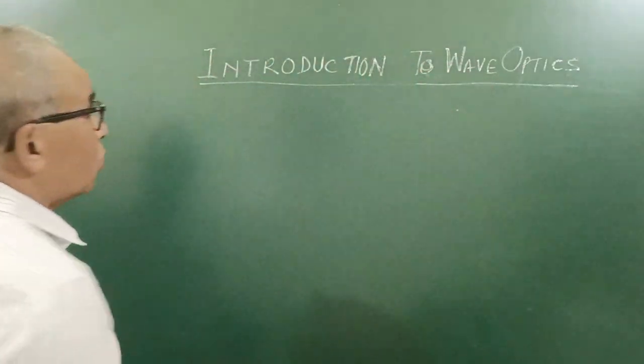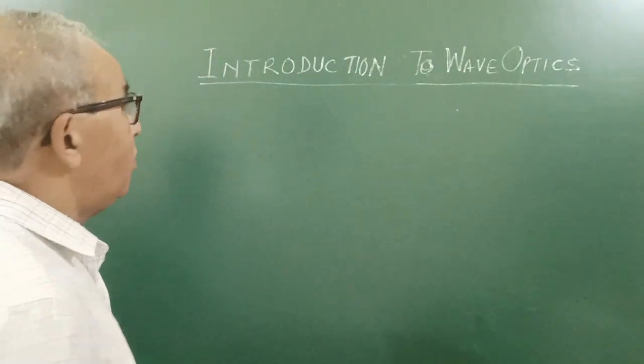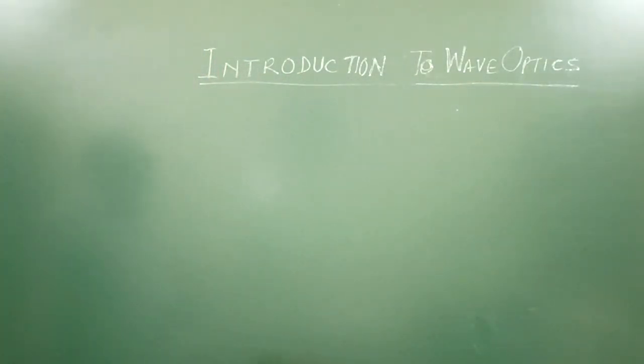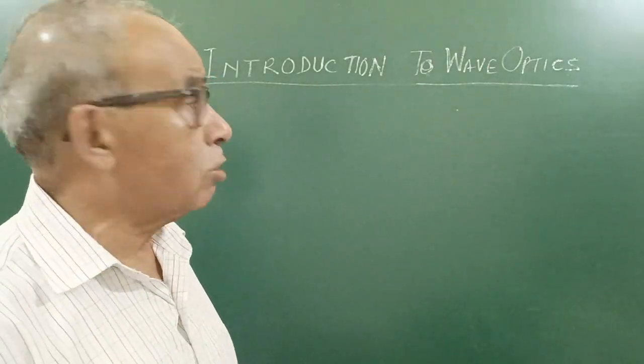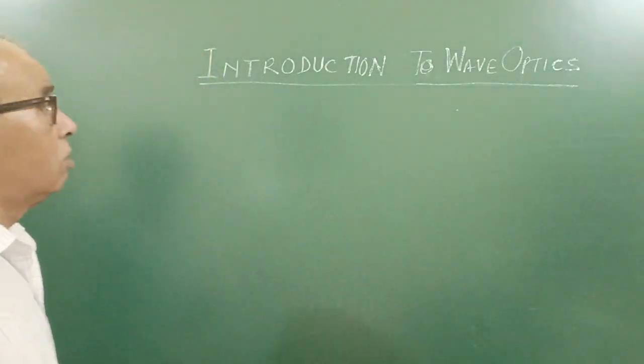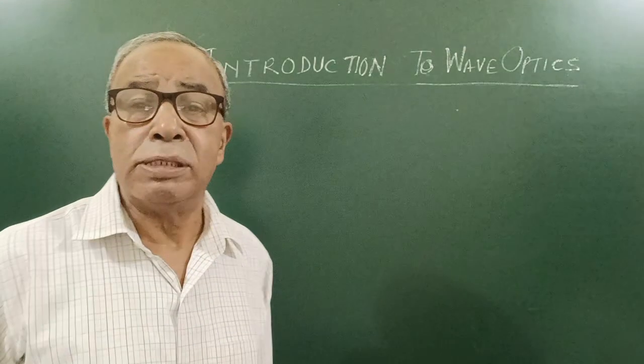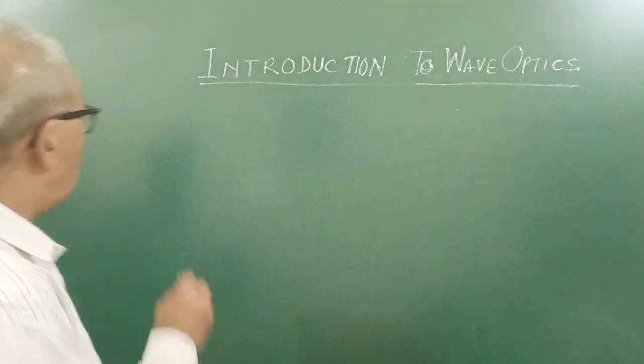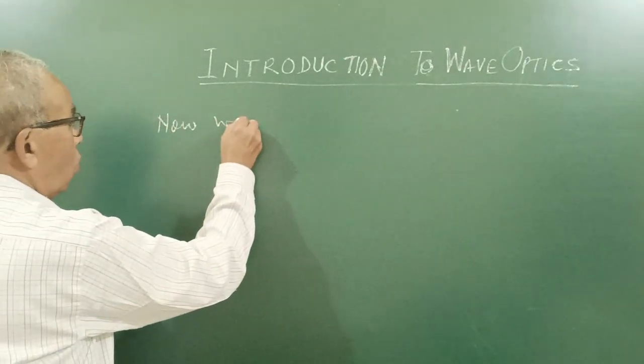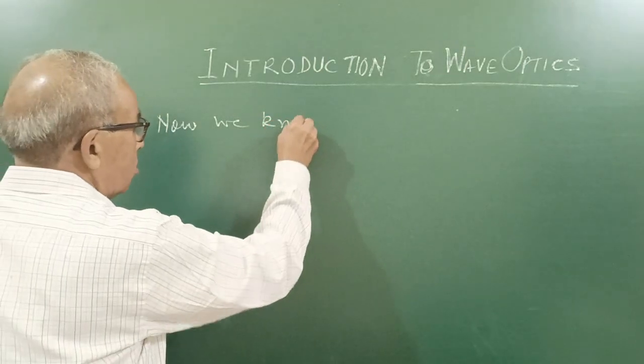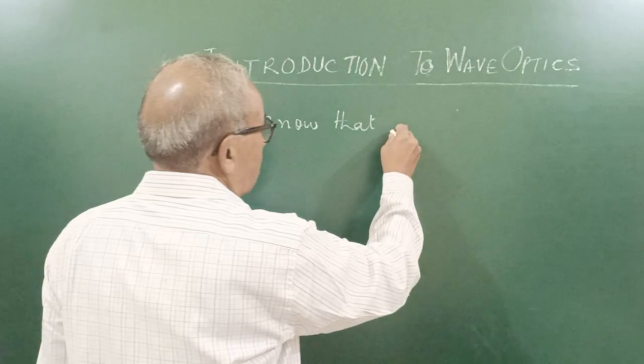So here in class 12 we are going to study wave optics. Optics means the subject in which we study light and effects of light. Now in chapter of electromagnetic wave, we know that light consists of electromagnetic waves.